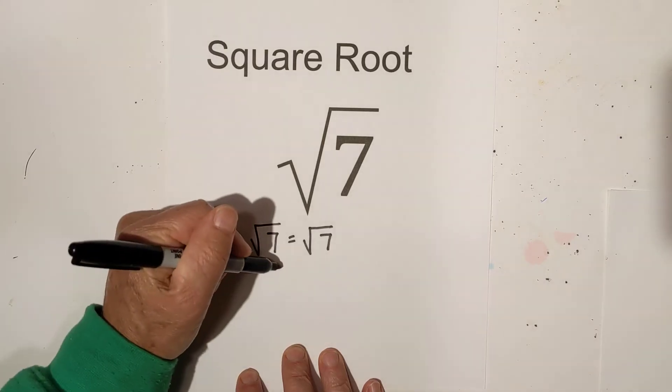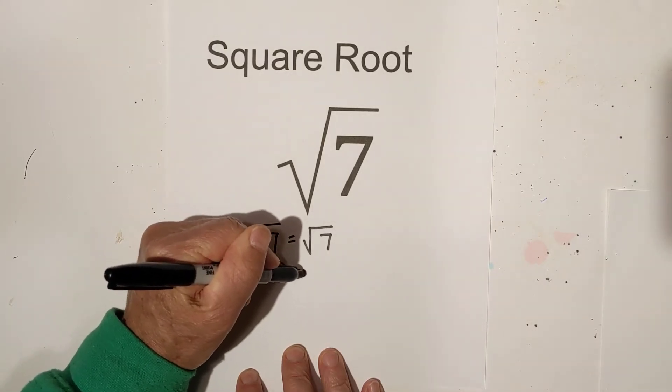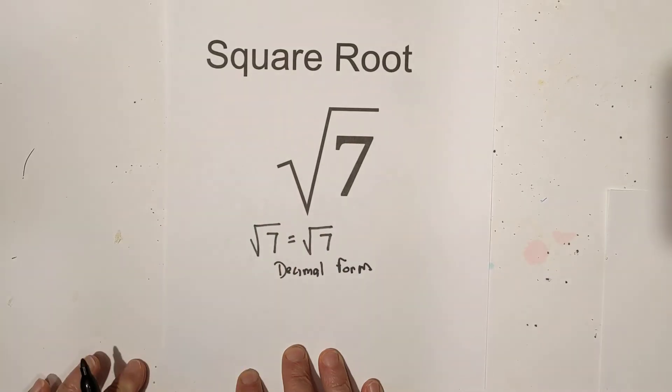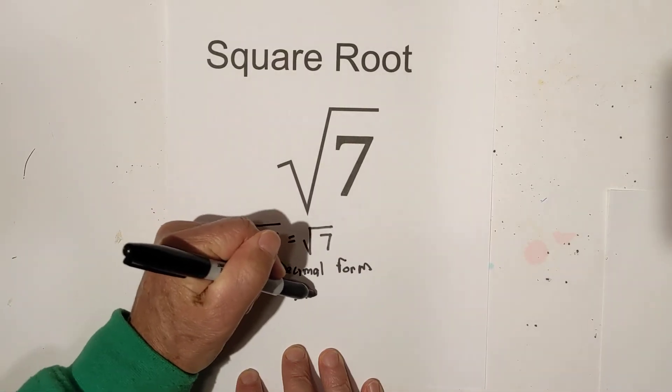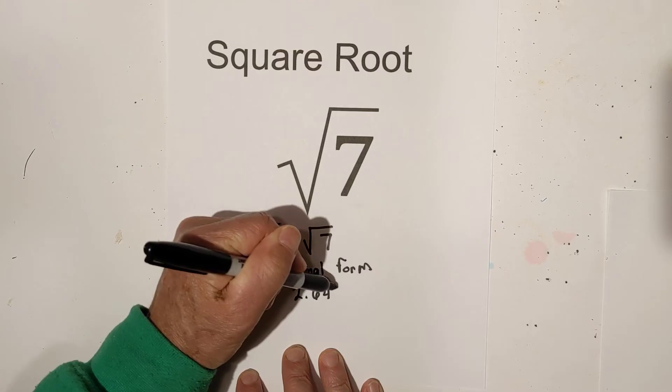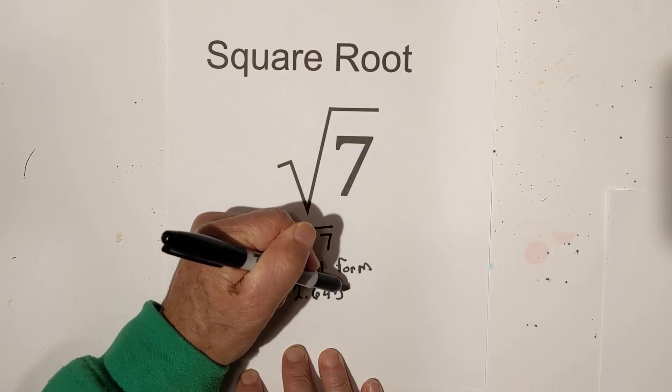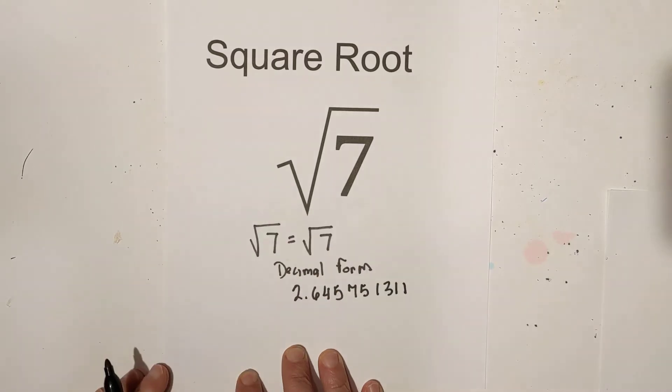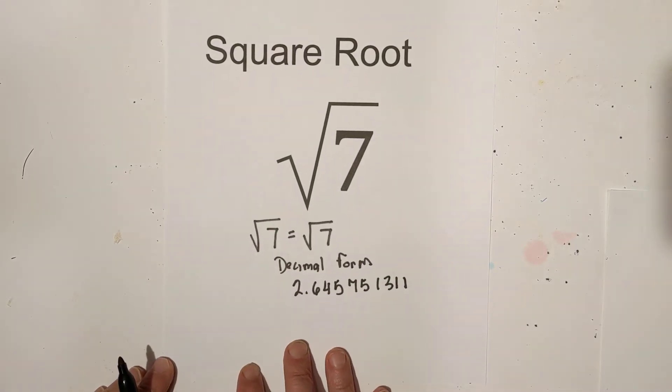If you would like to do it in decimal form, it is 2.645751311, and since it's irrational, it will continue.